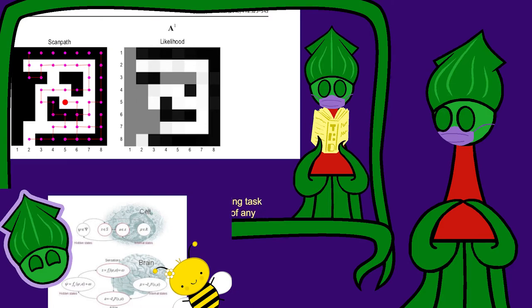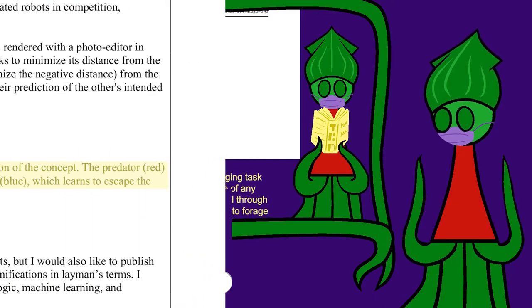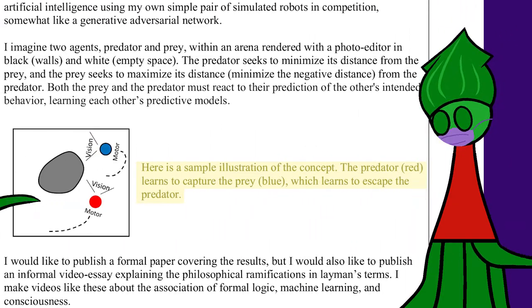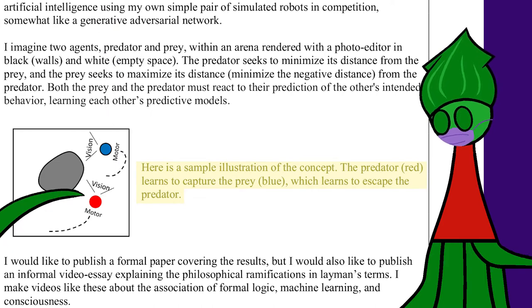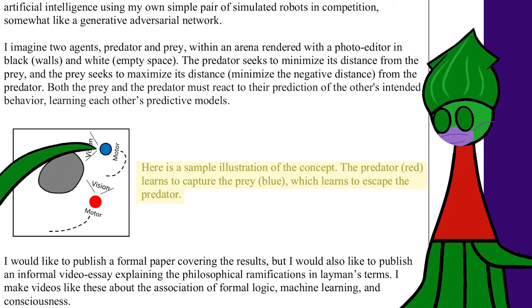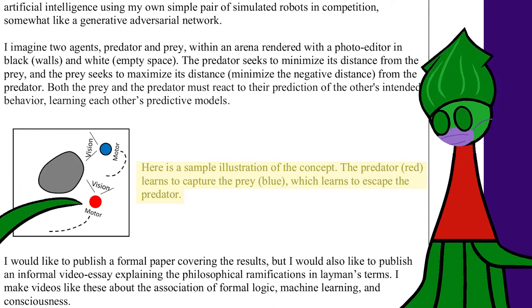Carl Friston demonstrated his Free Energy Principle by training a program to navigate a maze. I want to train two programs to navigate a maze, one predator and one prey. The predator wants to minimize its distance to the prey. The prey wants to maximize its distance from the predator.